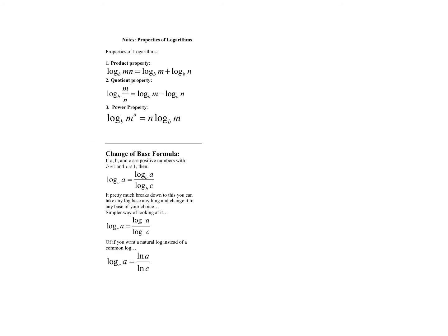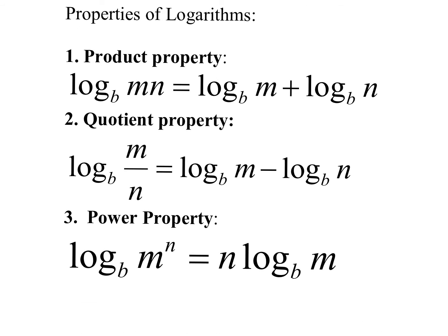We also have section 7.5, which was all about properties of logarithms — expanding and condensing. We're going to focus on condensing, particularly when solving equations. If you have log base whatever of M plus log base same base of N, that plus sign means you condense them into one single log and multiply M and N together — that's the product property. Or if you have a minus sign between two identical logs, you condense them with M over N — that's the quotient property. If you have a number out front, you raise it to become the power — that's the power property.